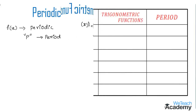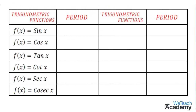Now let us discuss the periods of various trigonometric functions. There is a table provided here with trigonometric functions such as sin x, cos x, tan x, and so on. The period of sin x is 2π, the period of cos x is also 2π, and the period of tan x is π. Similarly, we get the periods of all these functions.